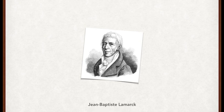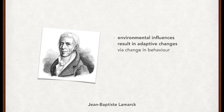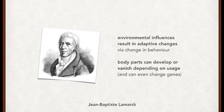He believed that environmental influences resulted in changes in the behavior of individual species, resulting in adaptive changes. Lamarck proposed that body parts could develop or vanish depending on whether they are used or not. These newly acquired adaptations could then even be genetically passed on to the individual's offspring.